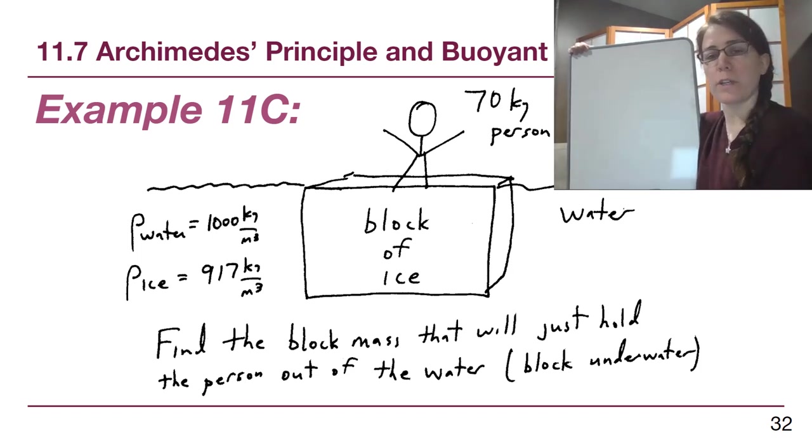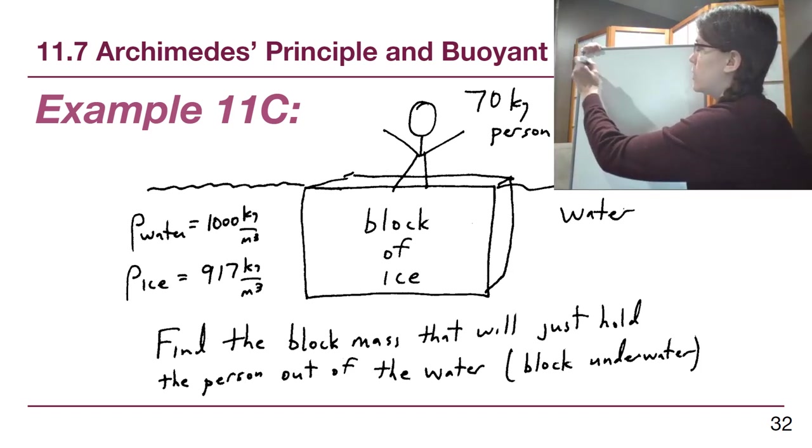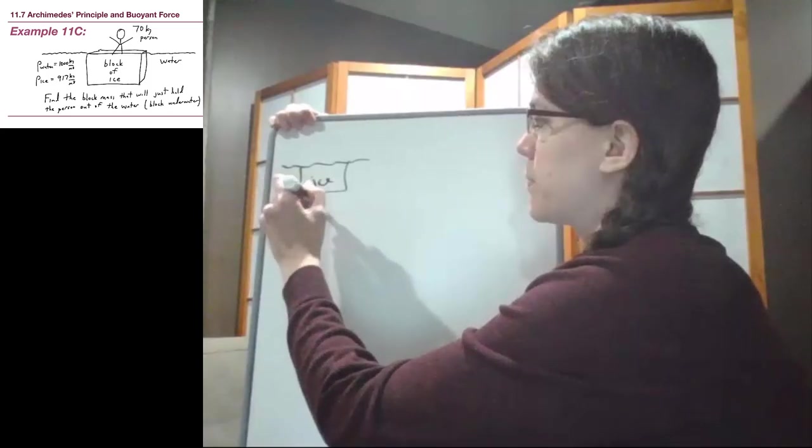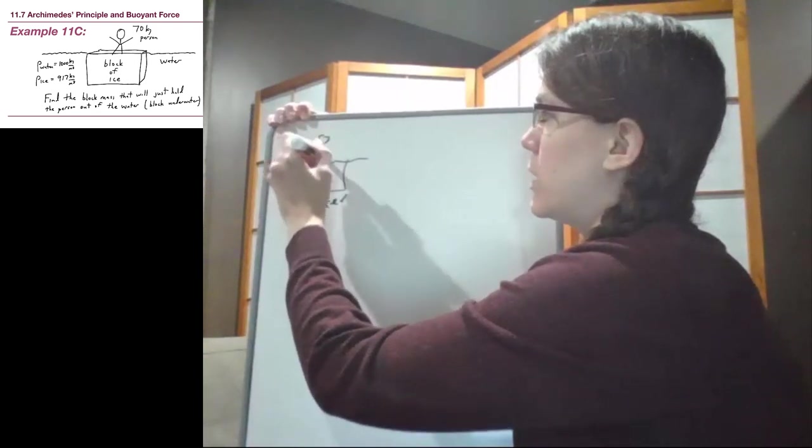Okay, so our goal here is to find the mass of ice required for this ice block that will be able to basically just hold the person out of the water, which means the entire ice is submerged, but the person is not. So we start with a picture, as always. So we have the water, we have the ice, and we have the person out here in the air.